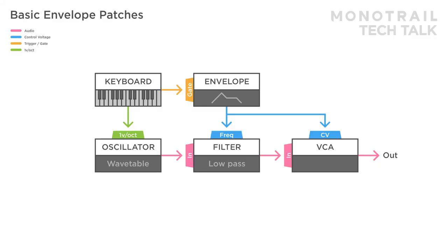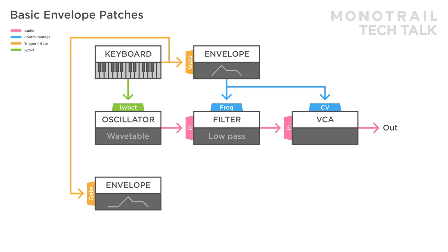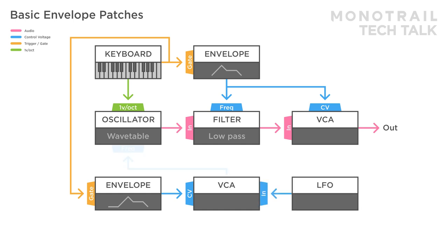Modulating the filter and VCA is common practice. But you can use envelopes to modulate any parameter you like. For example, you can trigger an attack decay envelope to modulate the wave shape of a wavetable oscillator, or use an envelope with a delay stage to modulate the frequency of an LFO — with the LFO also modulating the filter to add continuous movement to the sound. You can also use a copy of a gate on a DADSR envelope opening a VCA to control not the volume of a sound, but the amount of modulation — in this case an audio rate LFO modulating the frequency of the oscillator — creating delayed frequency modulation when a key is held for a longer time.